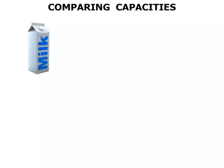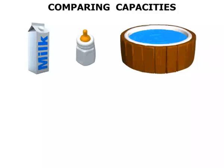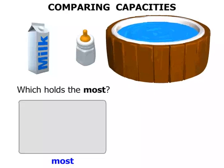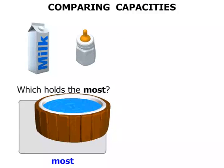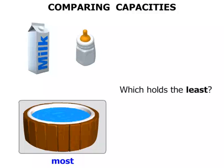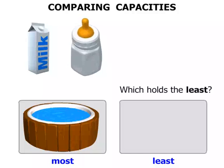We've got a milk container, a baby's bottle, and a swimming pool. Which holds the most? Well, the swimming pool will certainly hold the most. Which holds the least? The baby's bottle.